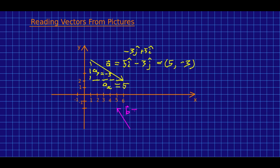So similarly this b I hope you can see is negative two i hat plus three j hat.